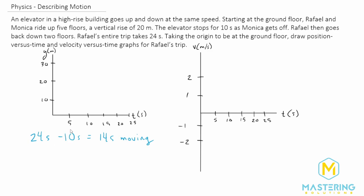Now, if you think about it, they say that it went up five floors first. So we go up five floors. Monica gets off and then they say it goes back down two floors. So we go down two floors.